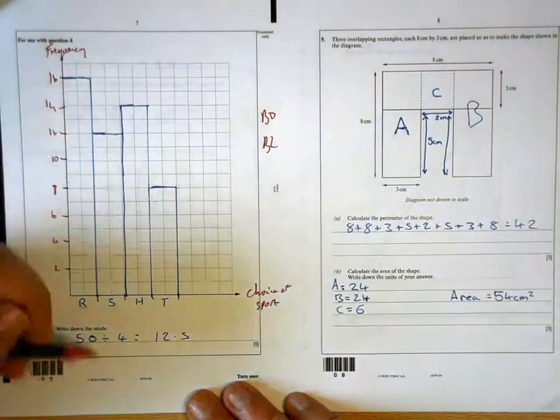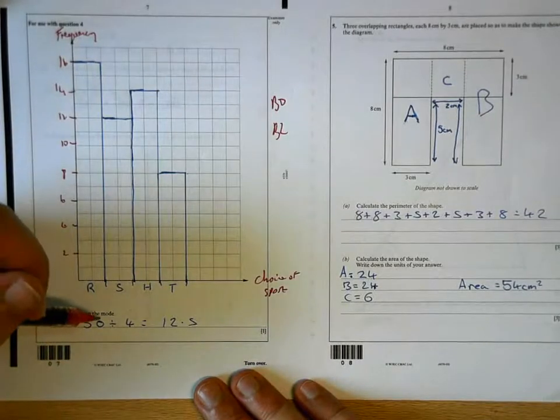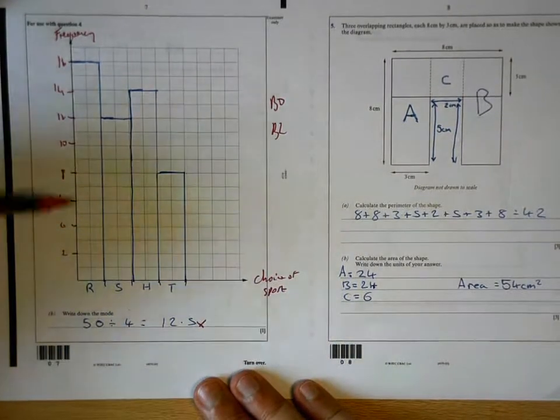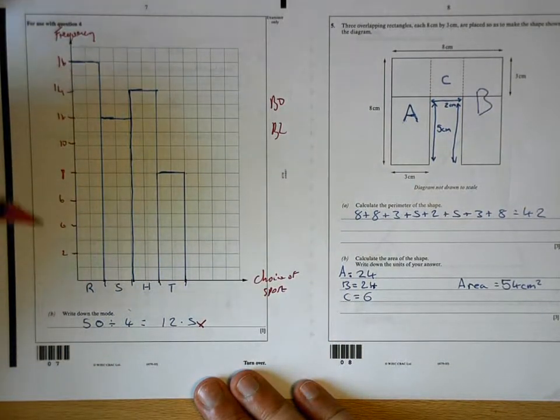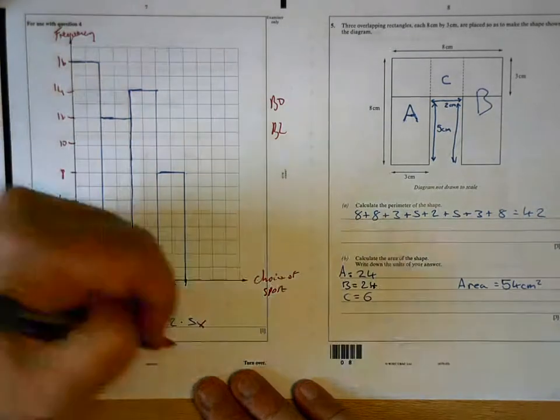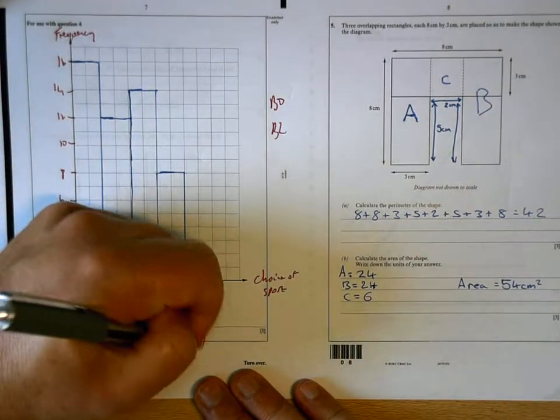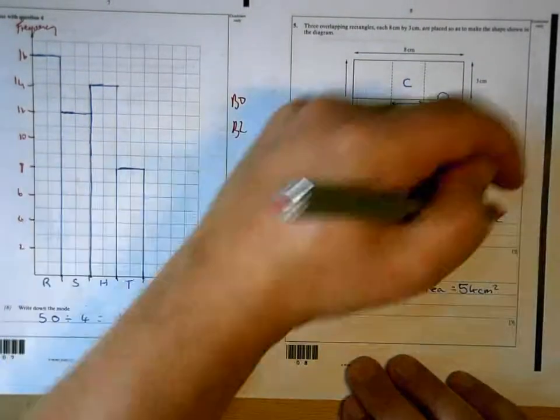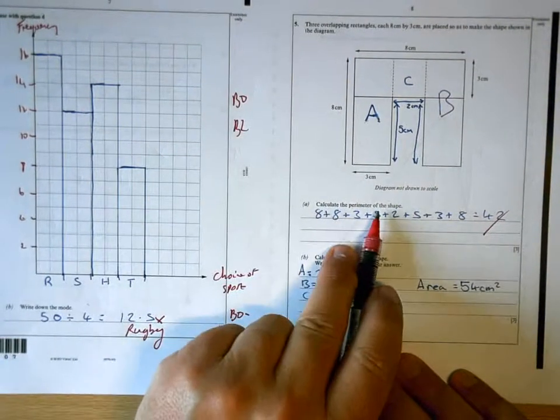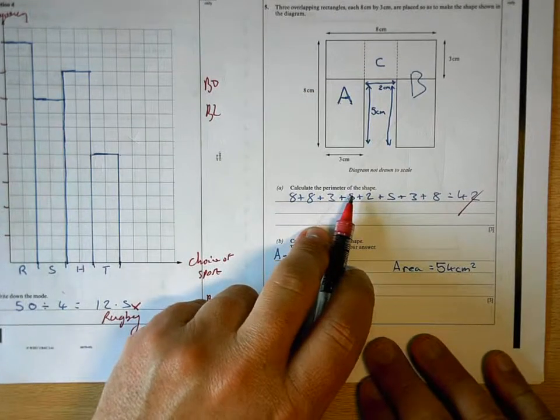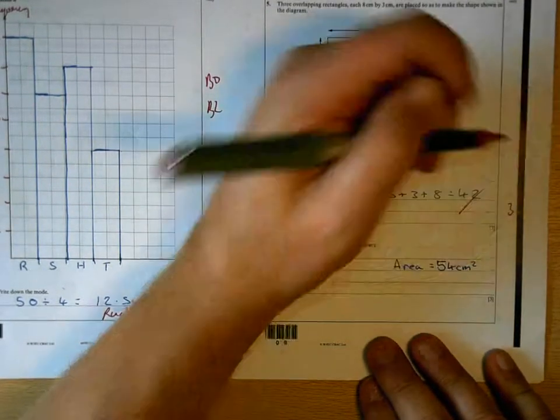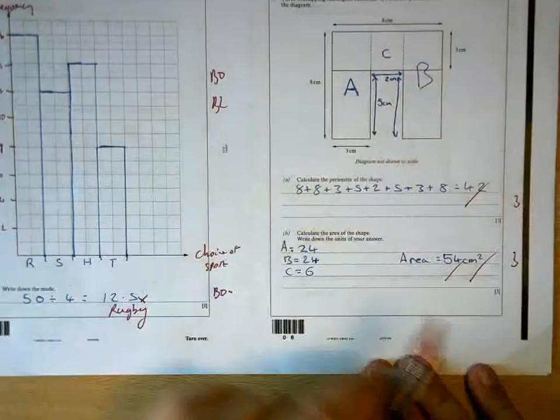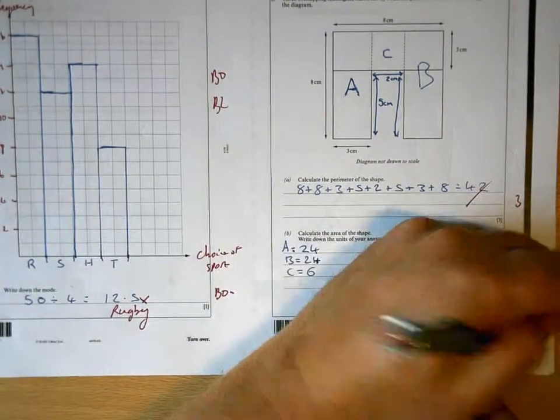The mode is the most frequent, not what you've done there. So the mode there is going to be the bar that's the highest, which is rugby. 42 is correct. It's not asking you to write the unit, so you wouldn't get penalized for that. And the area is 54. It's asking you for the units and you've given them. Good, six, eight for that page.